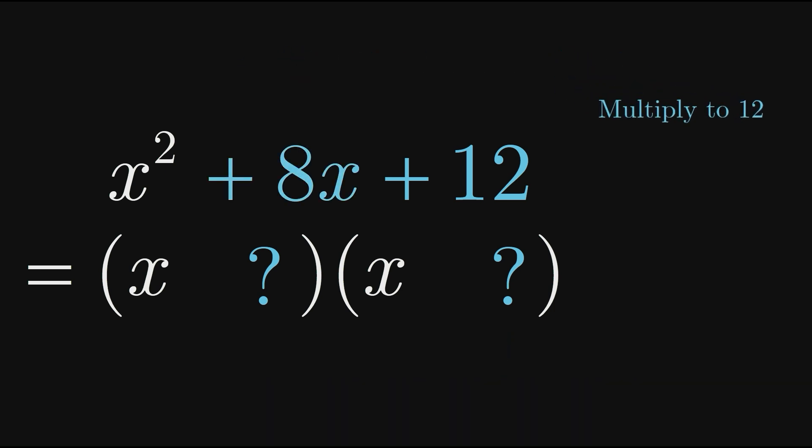Let's think of some whole numbers that multiply to 12. We have 1 times 12, 2 times 6, and 3 times 4, as well as these pairs in reverse order. In addition to multiplying to 12, the two numbers must also add to 8. The only pair that meets this requirement is 2 and 6.